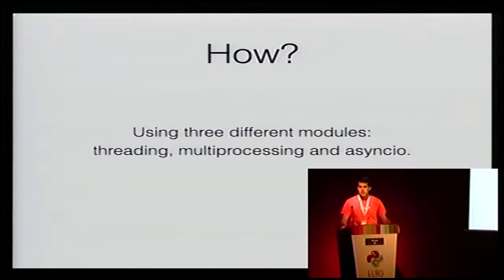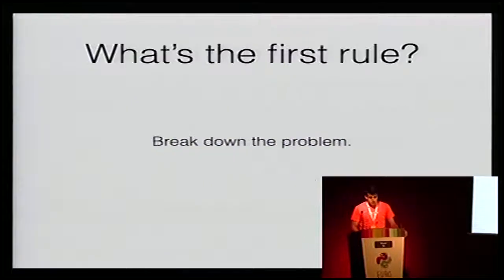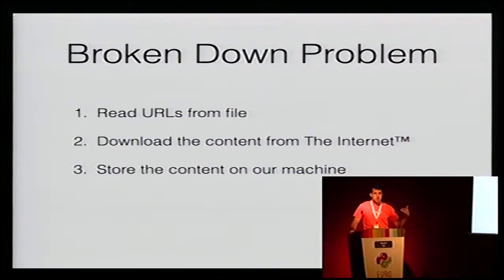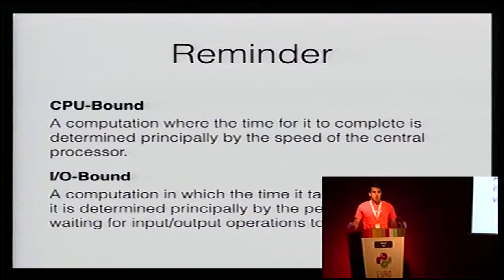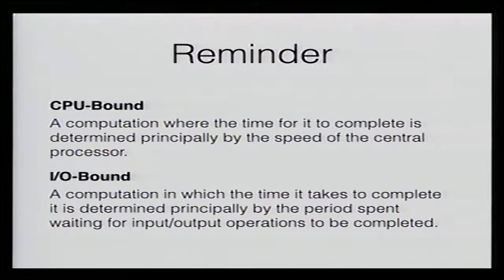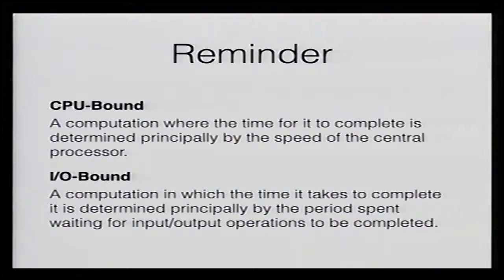Benchmarks make me nervous, especially for parallelism, so don't take it too seriously — it's just to give an idea of how they compare to each other. Before we start, I'll break the problem into three parts: read the URLs from a file, download content from the internet, and store it on our machine. Quick reminder — who is familiar with I/O bound and CPU bound types of computation? Just a quick recap: CPU bound computations are hungry for CPU, so faster CPU means they finish faster. I/O bound computations depend on how long they're waiting for I/O — you can give them a really fast CPU but it won't make a difference because they're blocking on I/O.